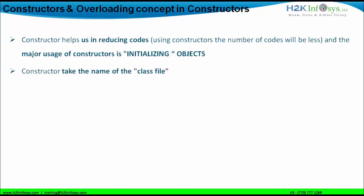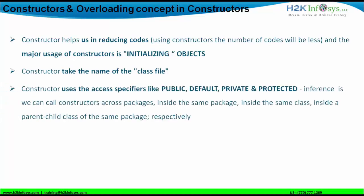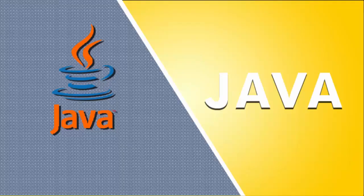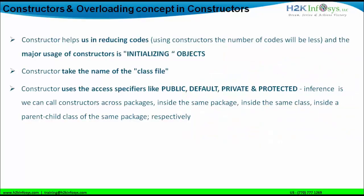It is very important that a constructor takes the name of the class file — whatever the class file name is, the constructor name will be the same. Constructors use access specifiers like public, default, private, and protected. A public constructor has the keyword 'public', a default constructor has no keyword, a private constructor has the keyword 'private', and a protected constructor has the keyword 'protected'.